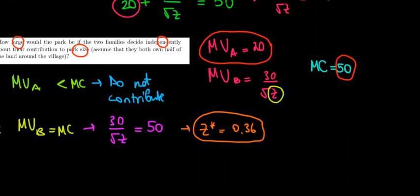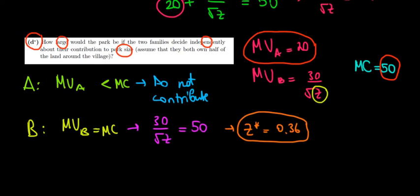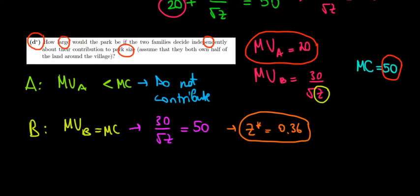But here, the park is smaller - it's only 0.36 meters square. That's because each of them thinks about their own utilities. Family Bestly does not think that the level of the park size is going to make family Adams happy as well, so they do not want to produce more for them. They only want to produce for themselves.